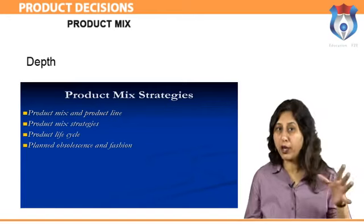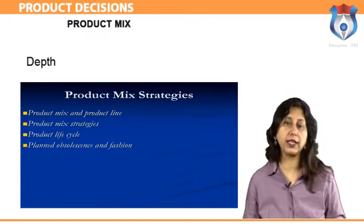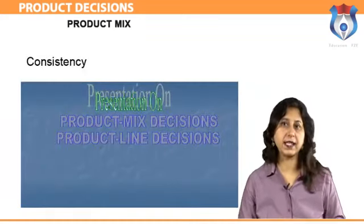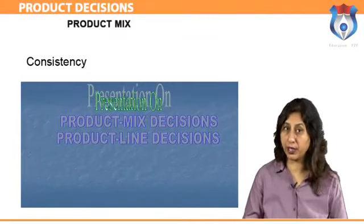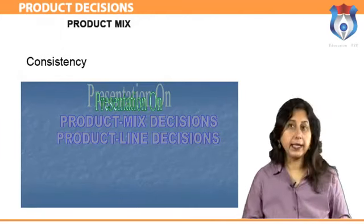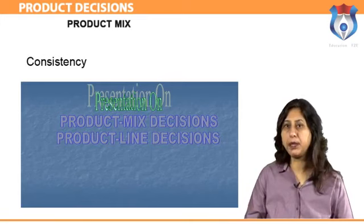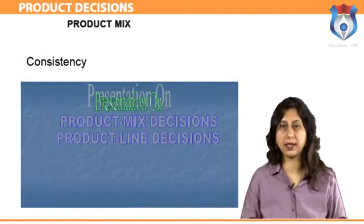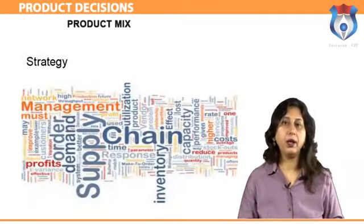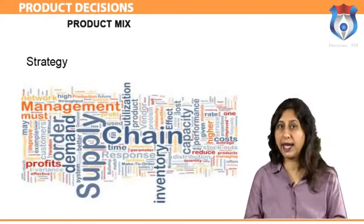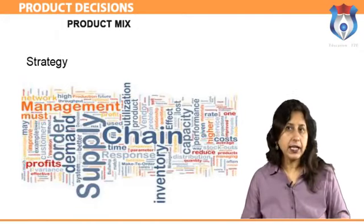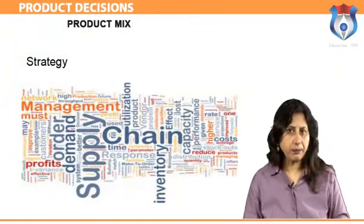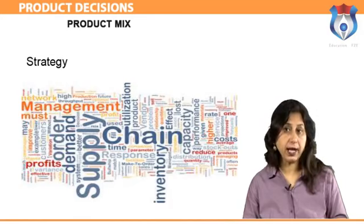Depth: a company's product mix depth pertains to the total number of variations for each product. Product variation can include flavor, fragrance, size, and any other salient attribute. Consistency: consistency in product mix refers to the relationship between product lines including use, production, and distribution. Almost all companies start with limited width, length, and depth in their product mix and will also be highly consistent early on. However, competition or technology may force a company to become more diversified.